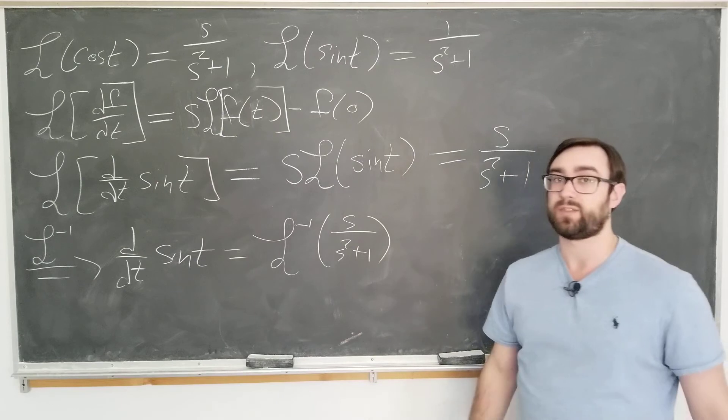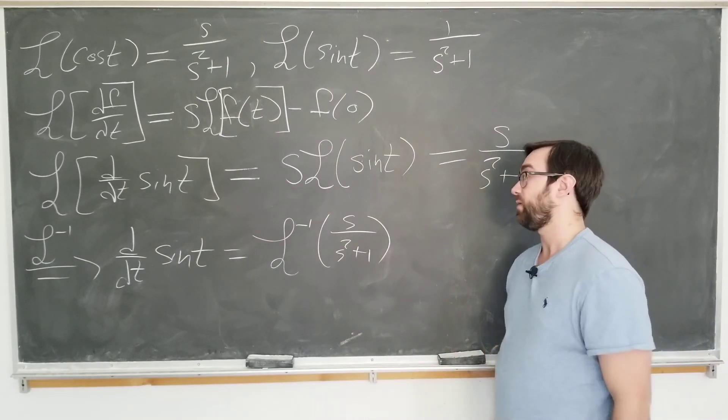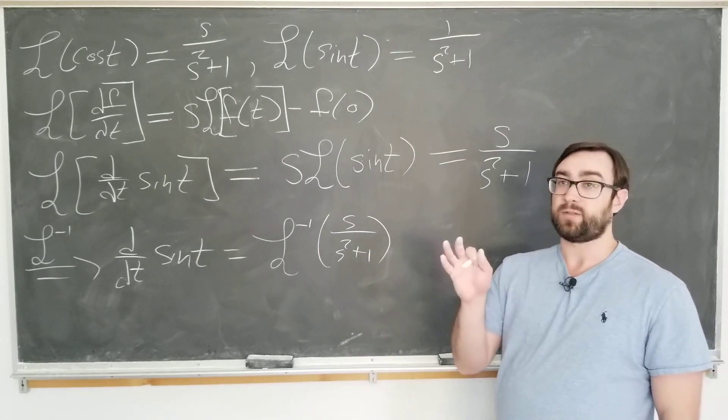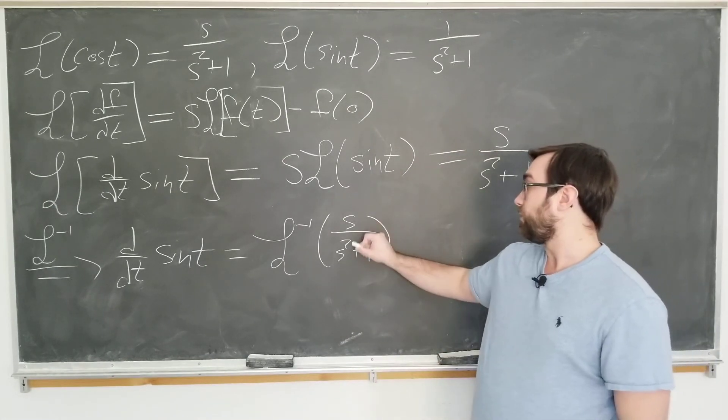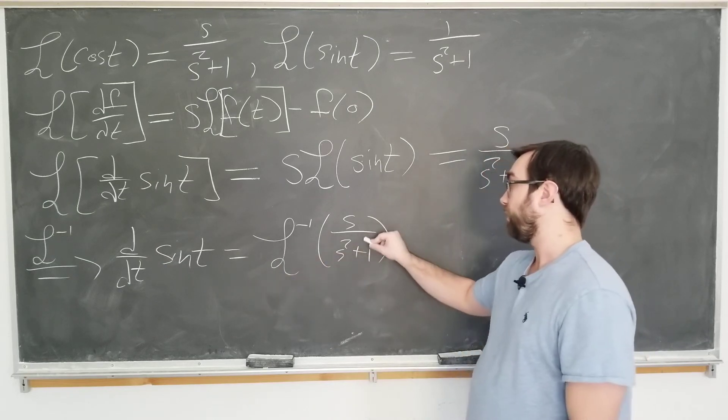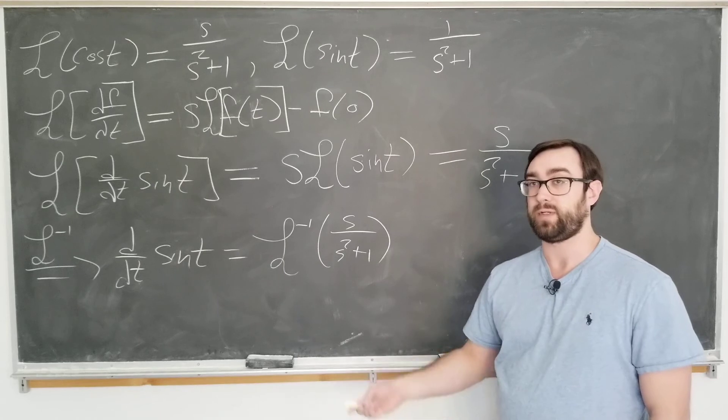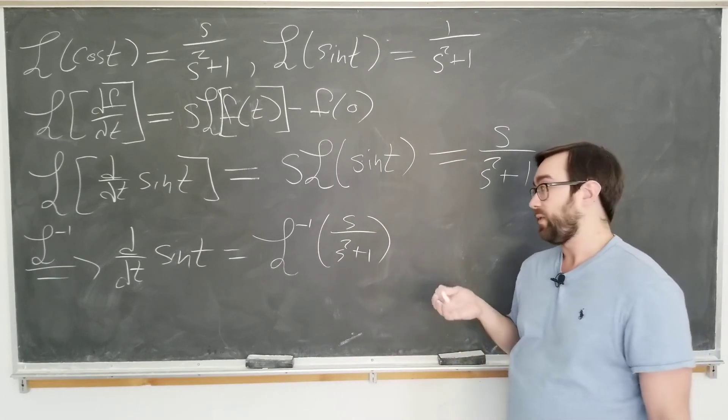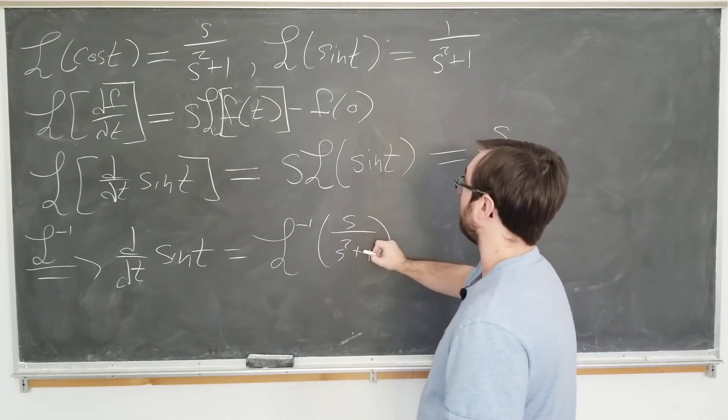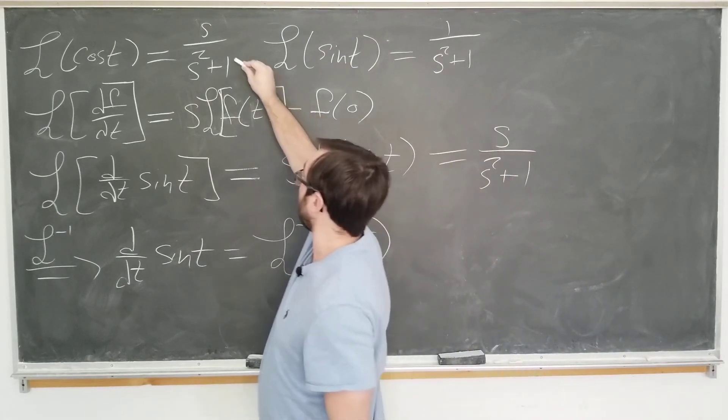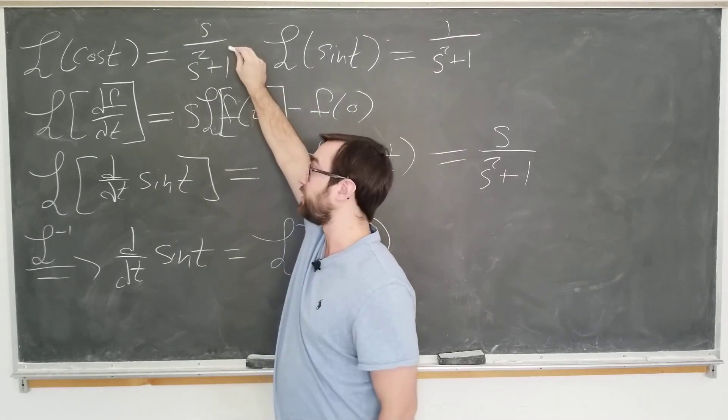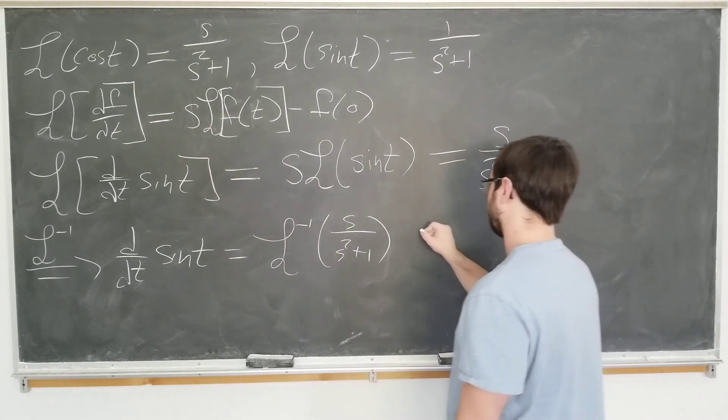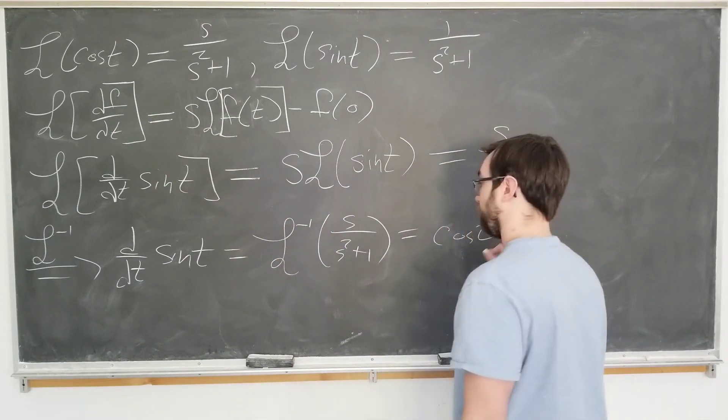Now this fancy inverse Laplace notation may scare you. You may think that you have to evaluate some kind of a complex contour integral along the Bromwich contour. But you do not. What this tells you is you need to find the function of t whose Laplace transform is this function of s. Well, we got two functions on the board. You can probably just guess that one of those is going to be it. But you don't have to guess because let's just look at s over s squared plus 1. It's this one. This function of s corresponds to a Laplace transform of this function of t, which is cosine. And we are done.